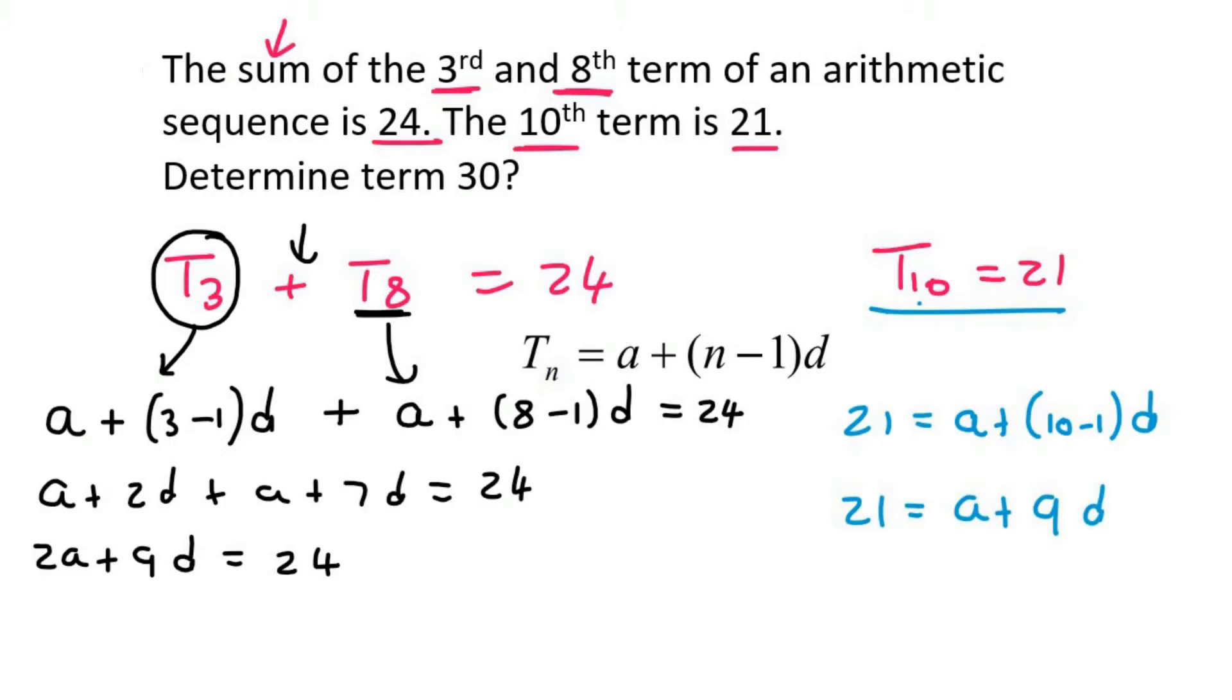Now it's a simultaneous scenario. So you can do this however you want. What I'm going to do is I'm going to try to use this equation and I'm going to get A by itself. If I do that, it would be 21 minus 9D.